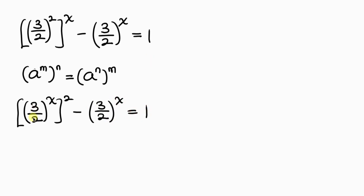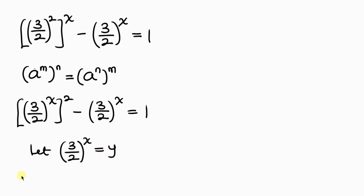Notice that we have 3 over 2 raised to the x appearing in both terms, which means we can introduce substitution. Let 3 over 2 raised to the x equal y. So the expression becomes y squared minus y equal to 1 — a very nice quadratic equation.